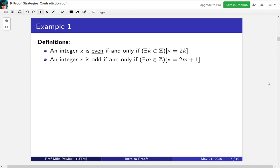Before we see this example, I want to remind us of some definitions. An integer x is even if and only if there exists an integer k such that x = 2k. An integer x is odd if and only if there exists an integer m such that x = 2m + 1. This is our definition of even and odd.